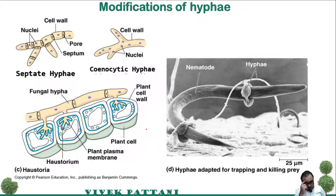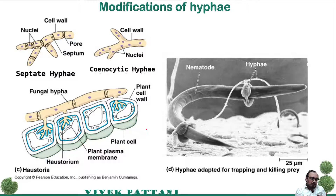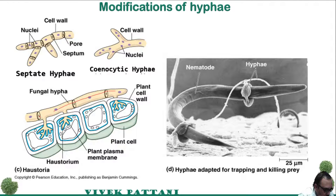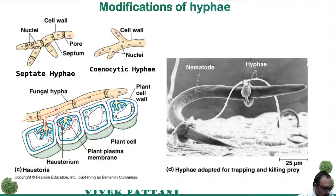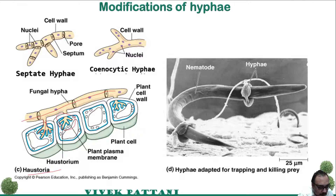Another specialized structure is the haustorium, which is basically found in pathogenic fungi, especially plant pathogens. There will be specialized structures extending into the plant cell inside, which absorb nutrients from the plant. This structure is known as the haustorium and the whole network is known as haustoria. It basically helps the fungi to absorb nutrients from the plants.